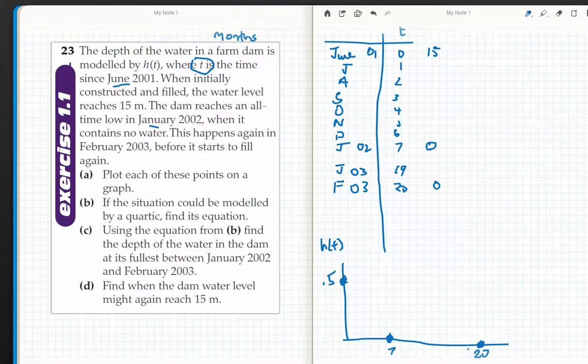If this situation could be modeled by a quartic, find its equation. Okay, it starts at 15 and then goes down to zero. It then goes back up again, goes down again at 20, and then goes back up again. And since it will be a positive quartic, I would imagine my quartic is going to look like that.